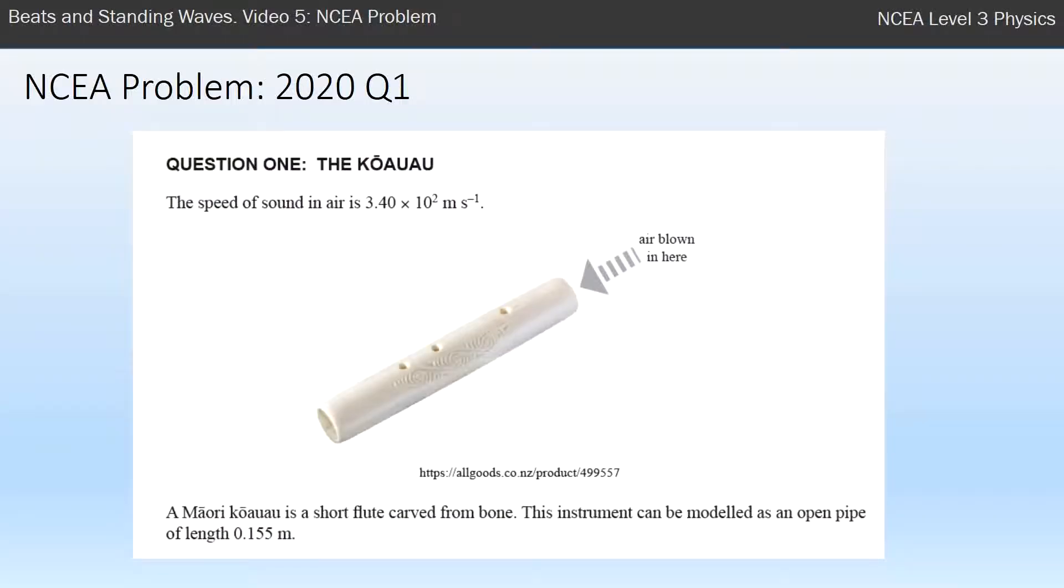Hi, this is Mr. McGovern. In this fifth video in the series on standing waves and beats, I'm going to look at an NCEA problem. This one's from the 2020 year, question one, about a kōauau, which is a Māori flute.